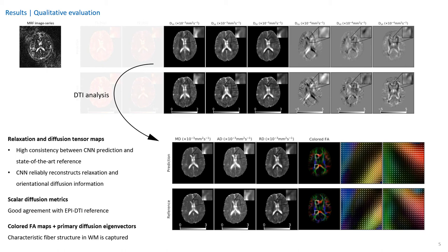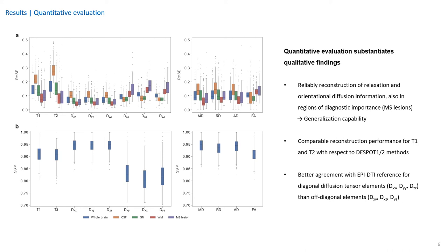Quantitative evaluations substantiate these qualitative findings. Overall, we reliably recovered diffusion and relaxation information, also in regions of diagnostic importance such as MS lesions, indicating the generalization capability of our method. Riemannian geodesic error and structural similarity index indicate that off-diagonal diffusion tensor information is more difficult to reconstruct in general, and in white matter and MS lesions in particular.